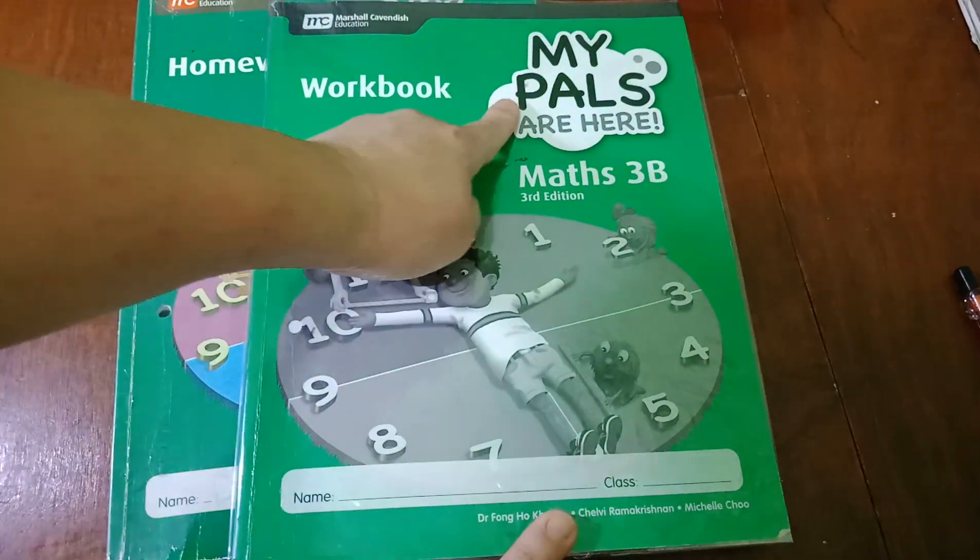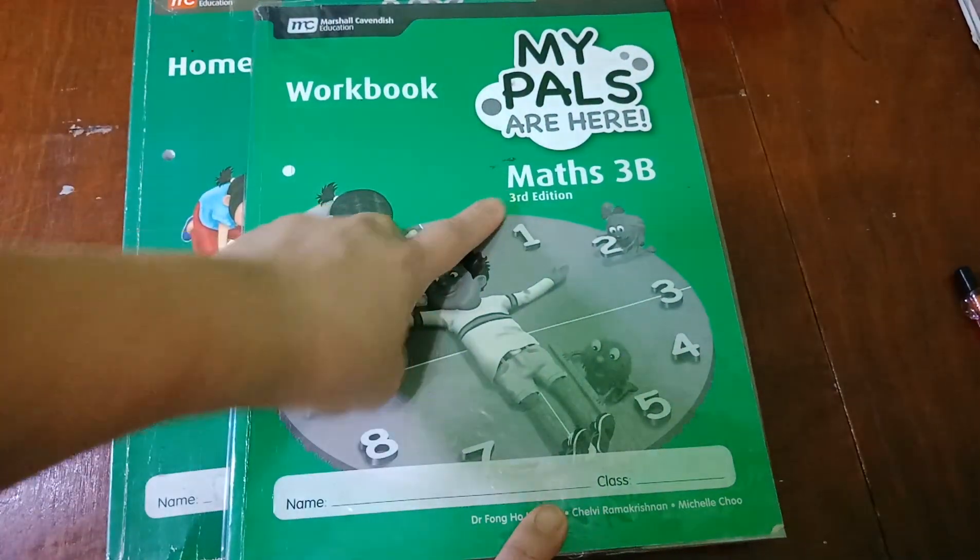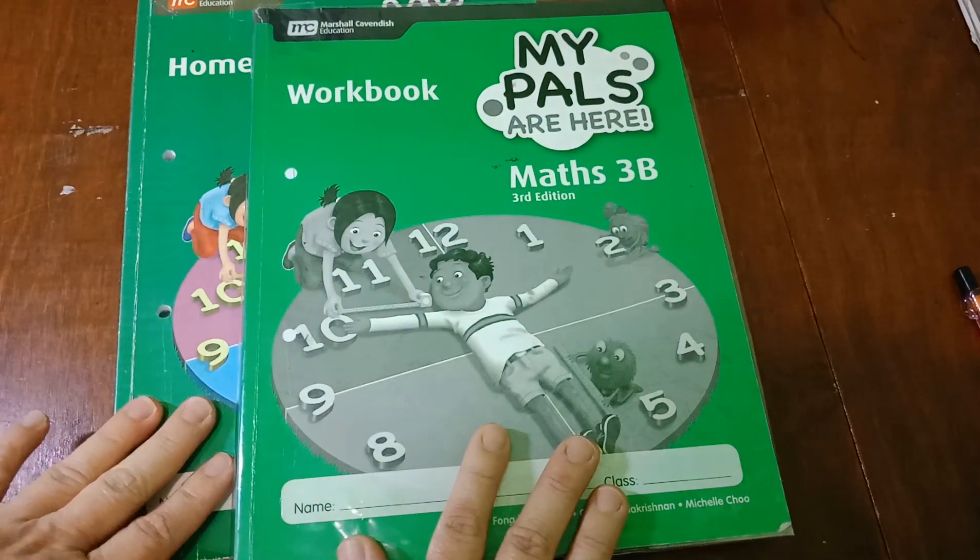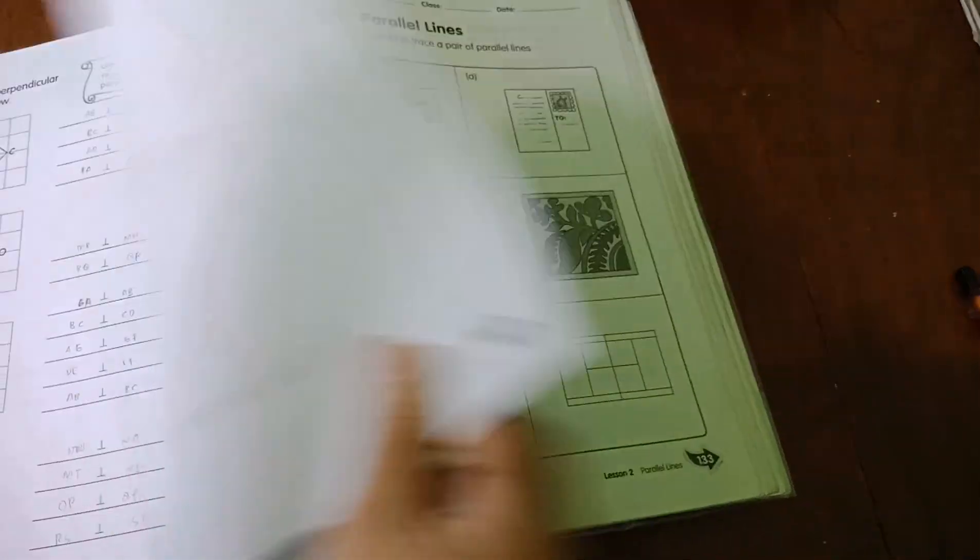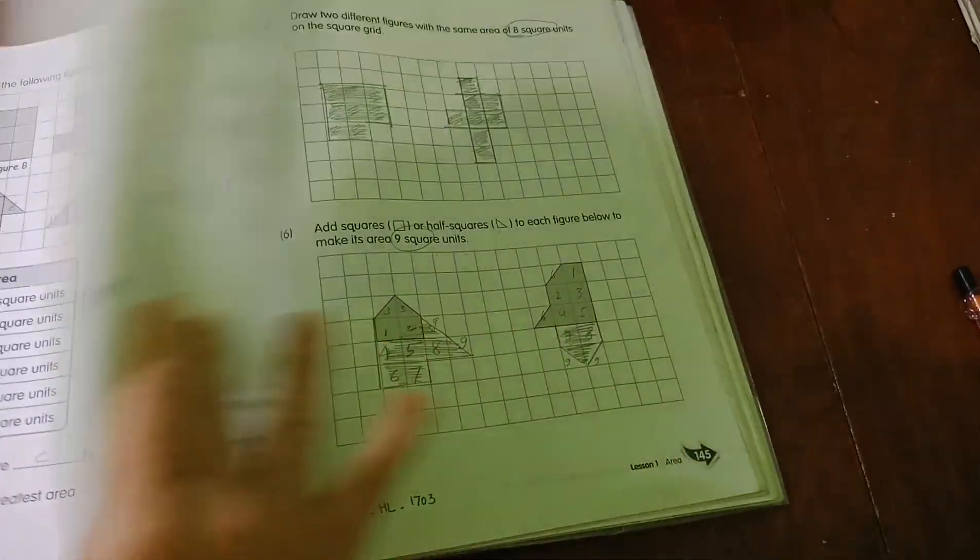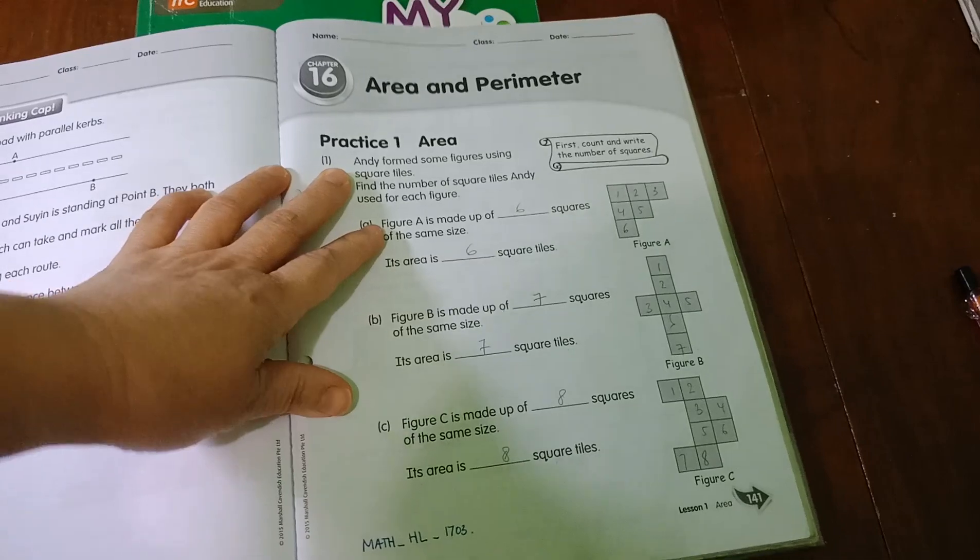Fortunately, our school used My Pals. I'm teaching grade 3 math, that's why I made a review for math grade 3. Nowadays, we already learn until chapter 16, it's about area and perimeter.